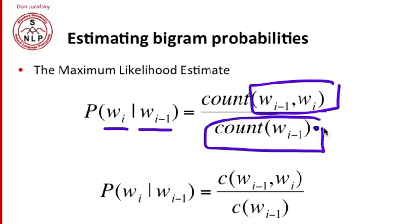So it's like saying, of all the times that we saw word i minus 1, how many times was it followed by word i? We'll use the notation count sometimes, or for simplification, we'll just refer to c. So the joint count of word i minus 1 and i divided by the count of word i minus 1.